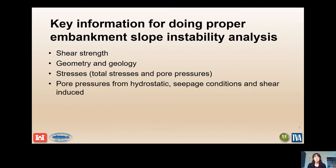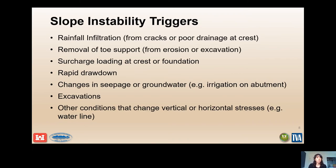Some key information for doing proper embankment slope stability analysis includes your shear strength assumptions, the geometry and geology, the stresses, and also the pore pressures. Some typical slope instability triggers include rainfall infiltration from cracks or poor drainage at the crest, removal of the toe support either from erosion or excavation, surcharge loading at the crest or foundation, rapid drawdown condition, changes in seepage or groundwater, excavations, and any other conditions that would change the vertical or horizontal stresses.